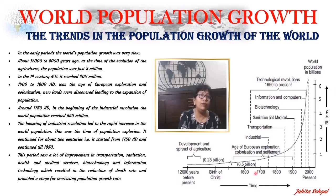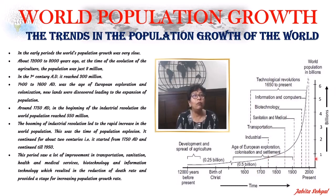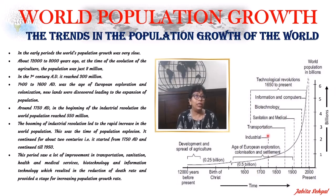Around 1750, at the beginning of the Industrial Revolution, the world population was just 550 million — a little more than half a billion. You know that 1 billion is equal to 1,000 millions.